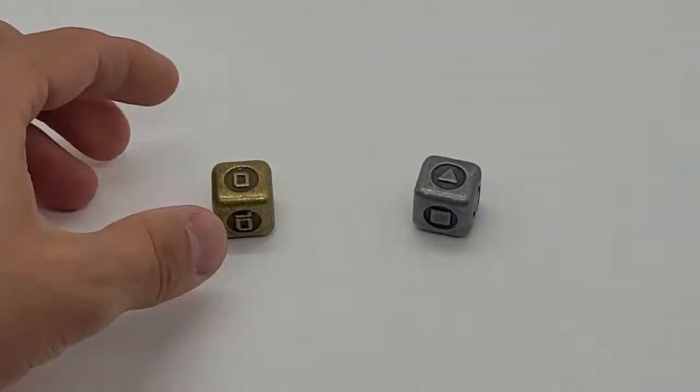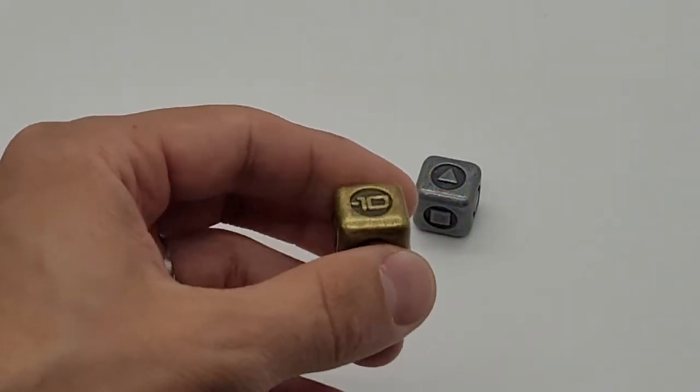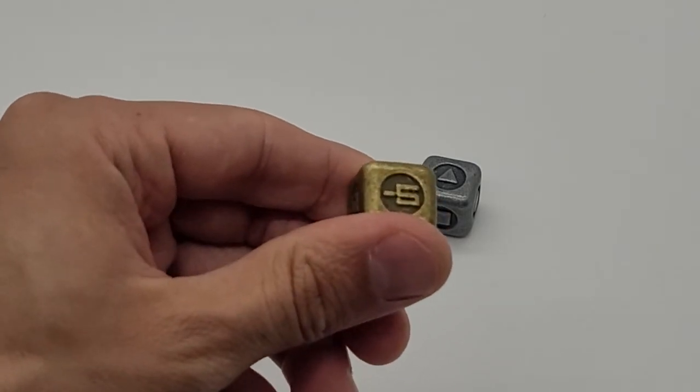And the gold dice has two zeros, ten and negative ten, and then a five and a negative five.